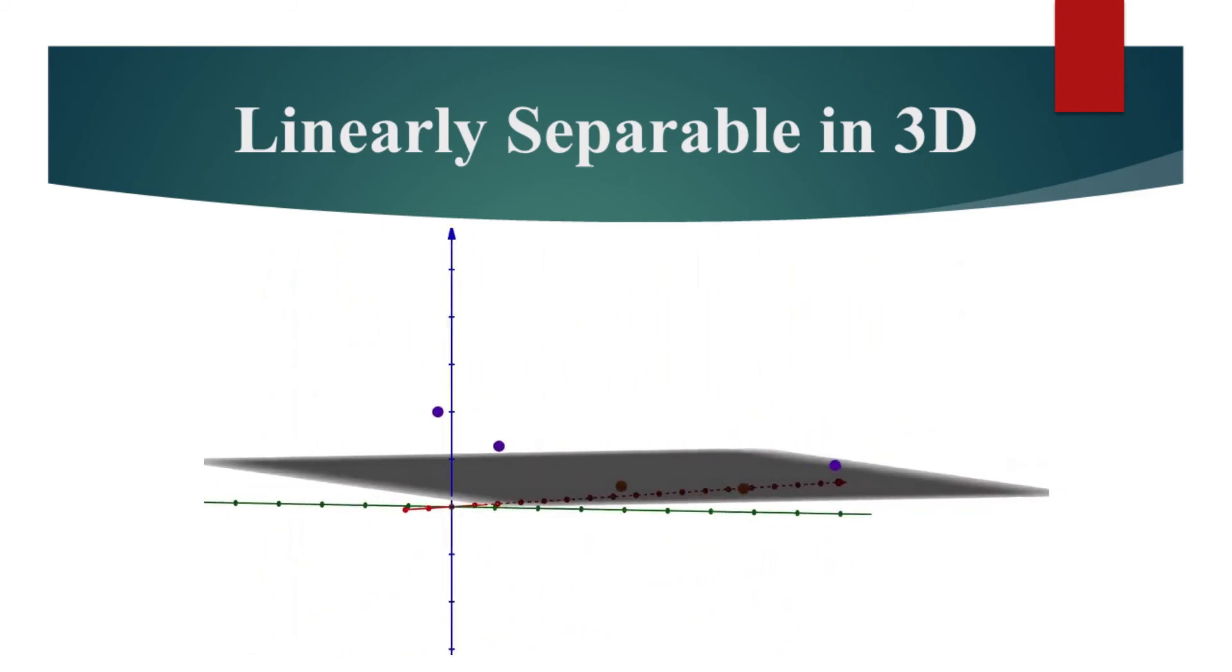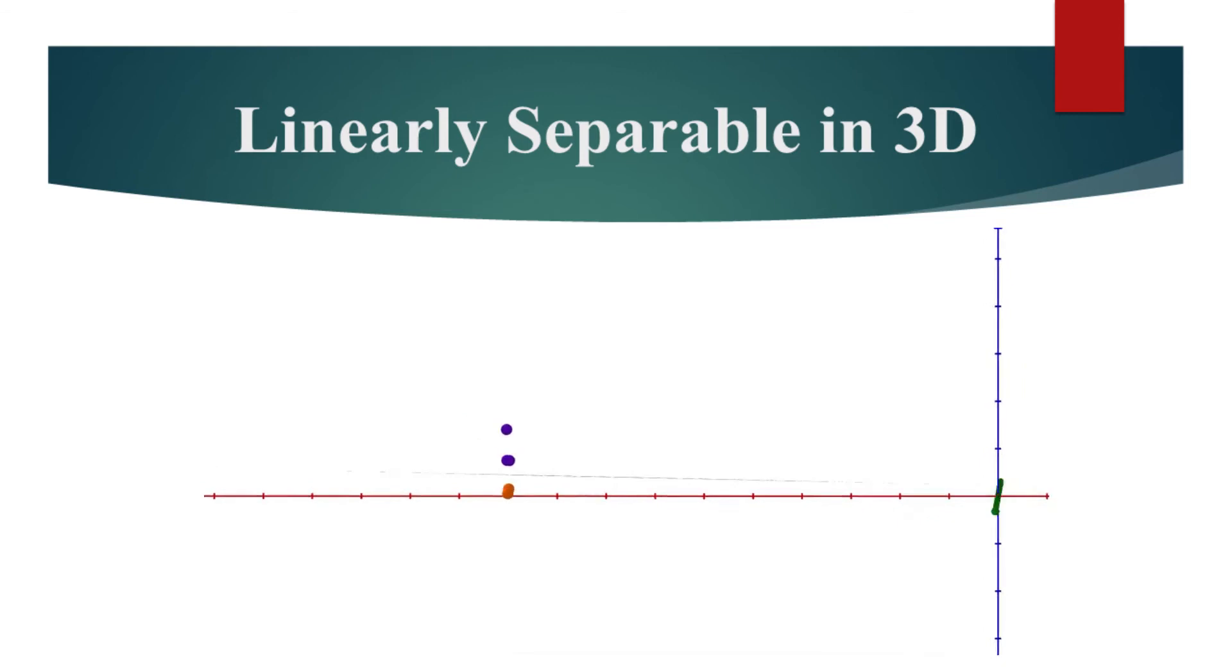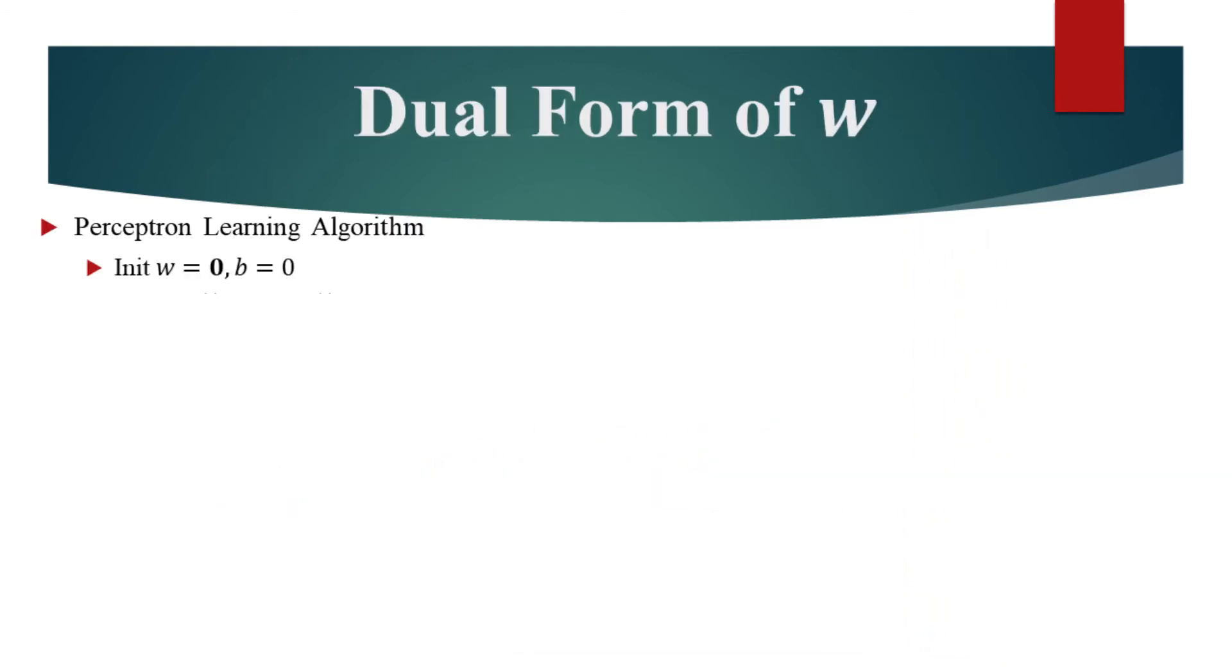We will now see how this works in the perceptron algorithm. Let's quickly remember the perceptron algorithm. We initialize the weight vector and an intercept term to zeros. And as long as any data point is misclassified, we update the trainable parameters. So for each data point, the parameters will be updated for some number of times. Let's introduce a vector alpha, which counts the number of times an update occurs for each data point.